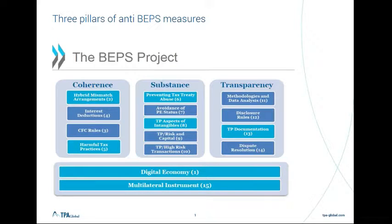To give some background, the BEPS project consisted of three pillars: one on coherence, one on substance, and the last one on transparency. As you will see later in the presentation, all these three pillars come together where we focus on the transfer pricing aspects of intangibles. The TP documentation, an element in the transparency pillar, will also give a lot of insight to other stakeholders, such as tax authorities, when it comes to establishing and checking where your substance is.